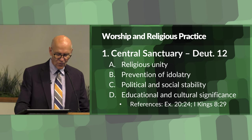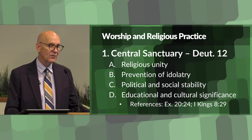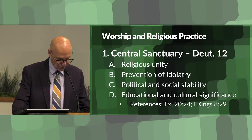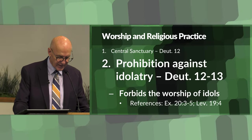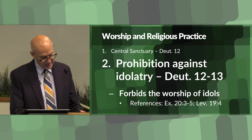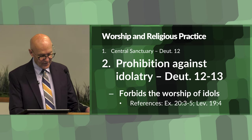You can go to Exodus 20:24 and 1 Kings 8:29 as examples of passages that talk about how the centralized place of worship - the temple - was built. Another topic in this worship and religious practice section would be prohibition against idolatry in Deuteronomy 12 and 13. This prohibition forbade the worship of other gods and the use of idols. The purpose was to ensure loyalty and purity in worship to Yahweh. You can read about this in Exodus 20:3-5 as well as Leviticus chapter 19.